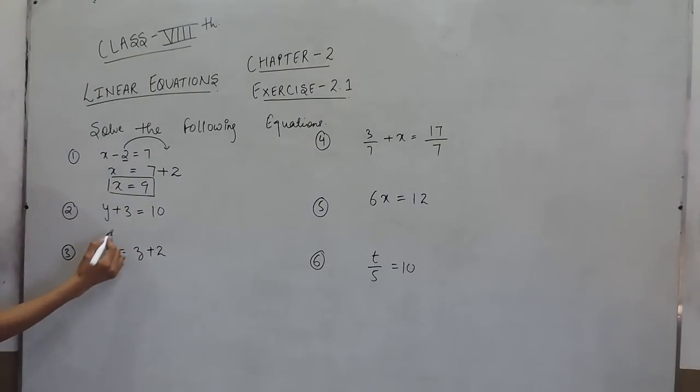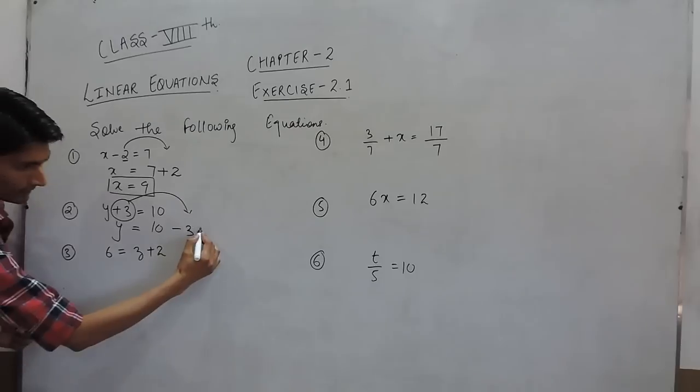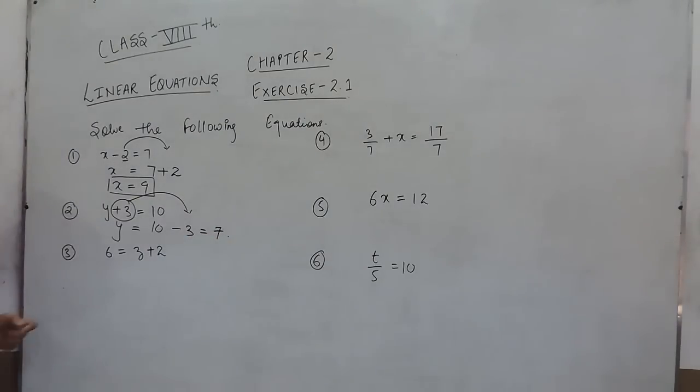In the next question, same thing. This positive term will go to the other side and become negative 3, and the answer will be 7. In this question, the variable is there and this constant has to shift to this side. This positive term will become negative and the z answer will be 4.